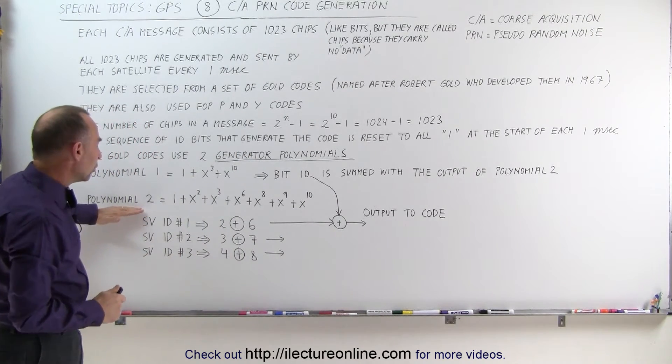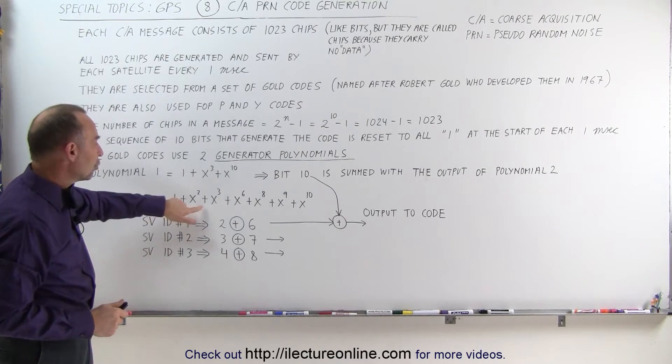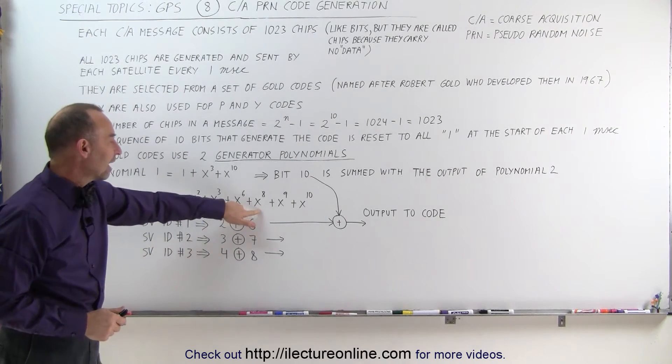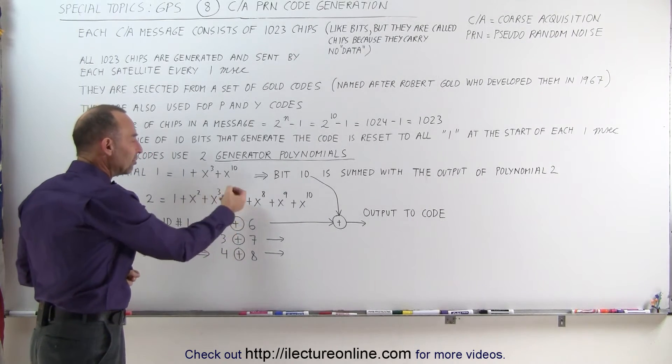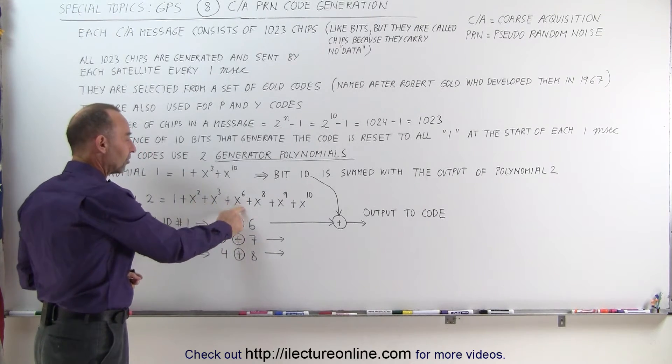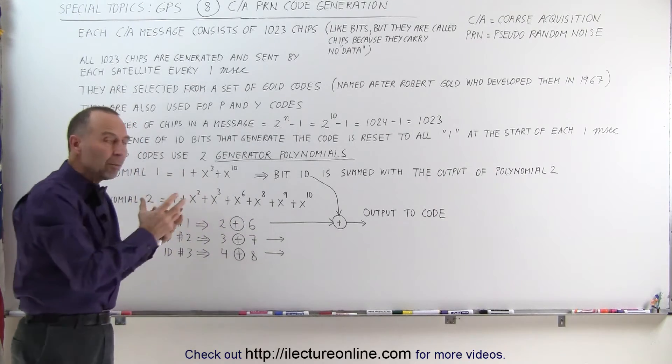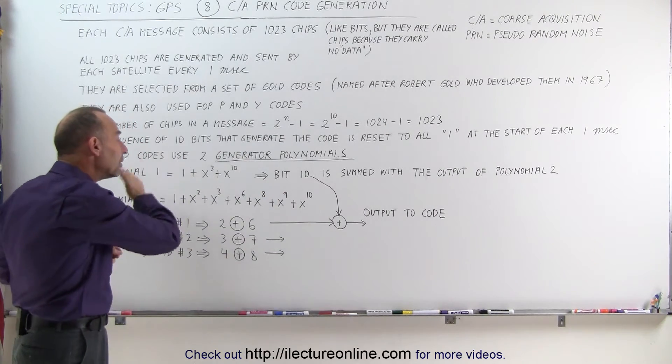On the second polynomial, notice we have 1 plus x2, x3, x6, x8, x9, x10. We will pull information from each of these bits, the 2nd, the 3rd, the 6th, the 8th, the 9th, and the 10th, sum them up and use that to feed in the bit string. So, what's going to happen is, each case, we sum up a new number that gets put into the initial bit string, and all the other bits move over by one bit, or by one position, and then we do the whole process over again.